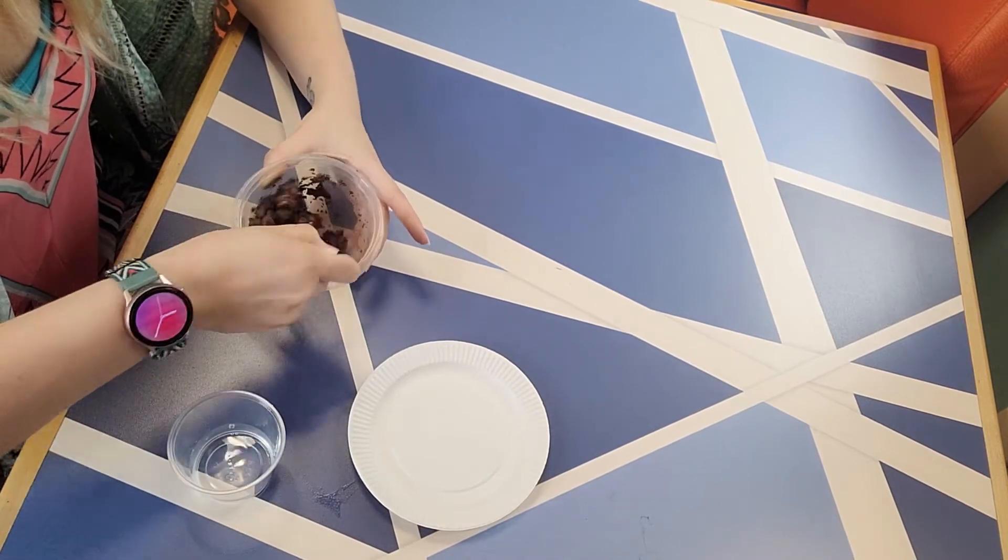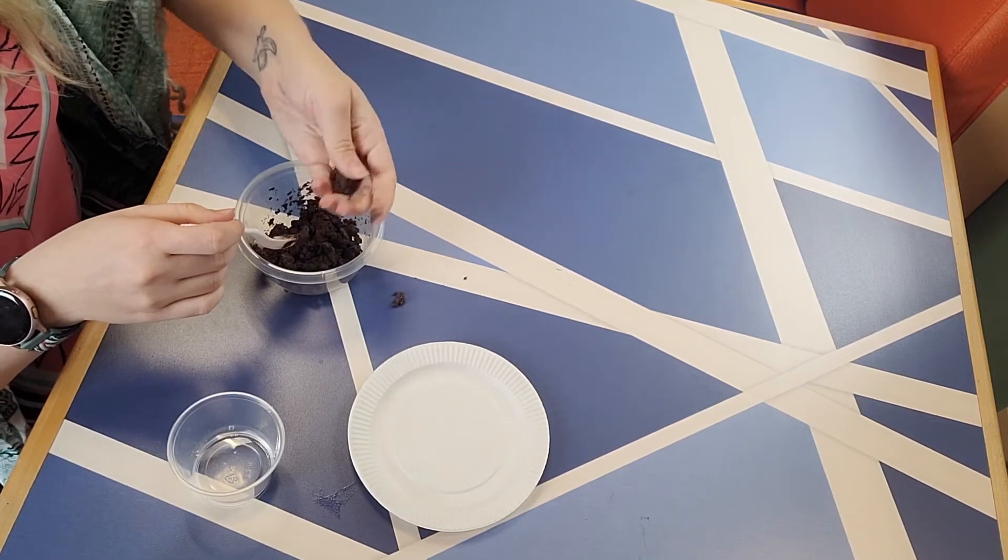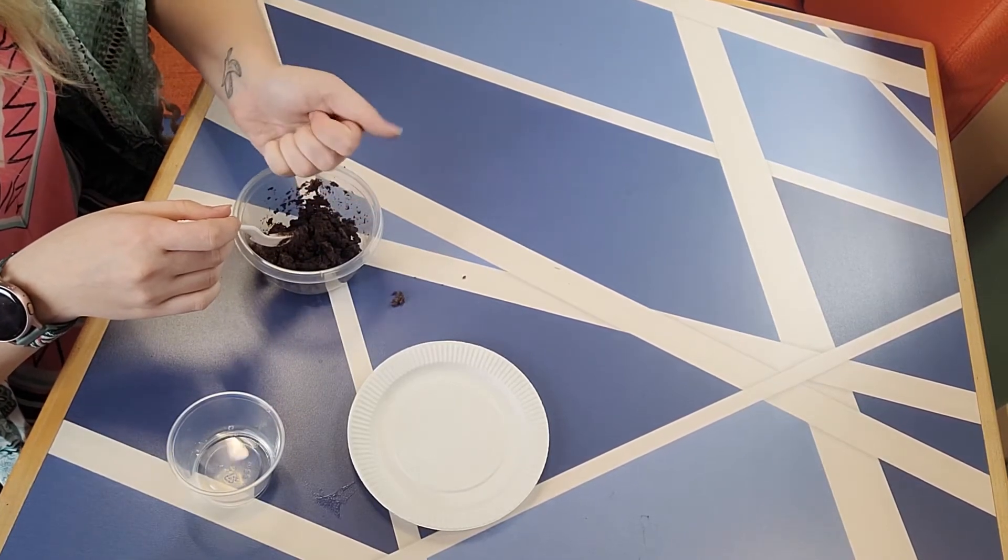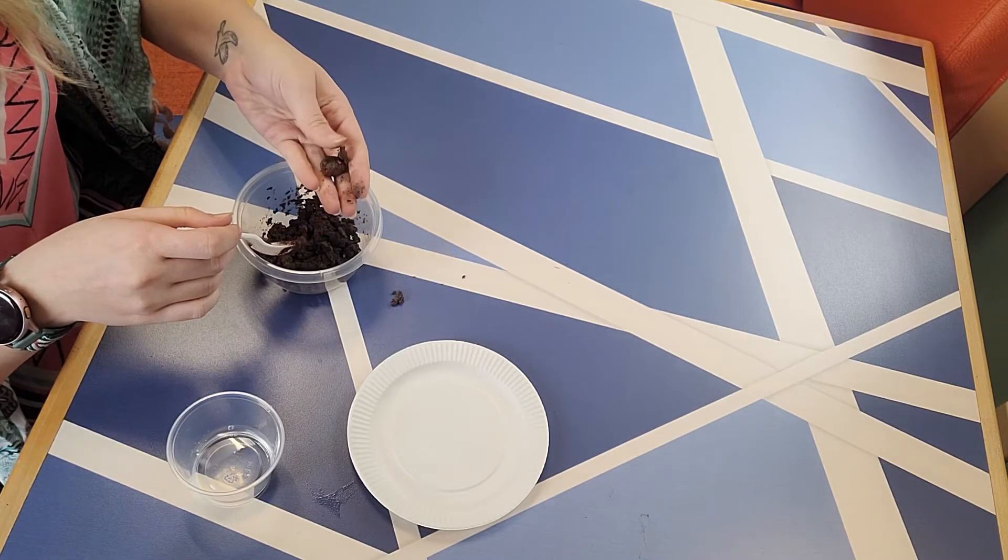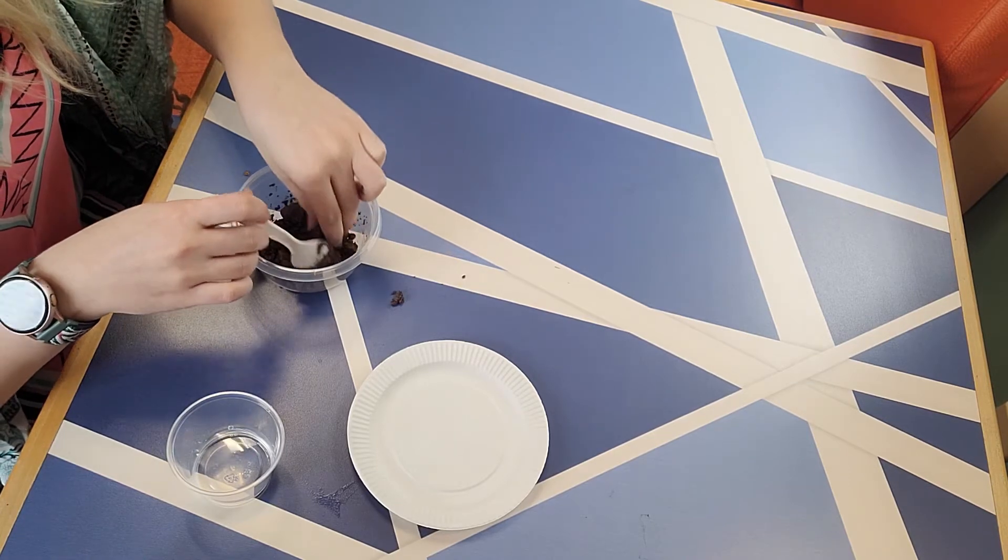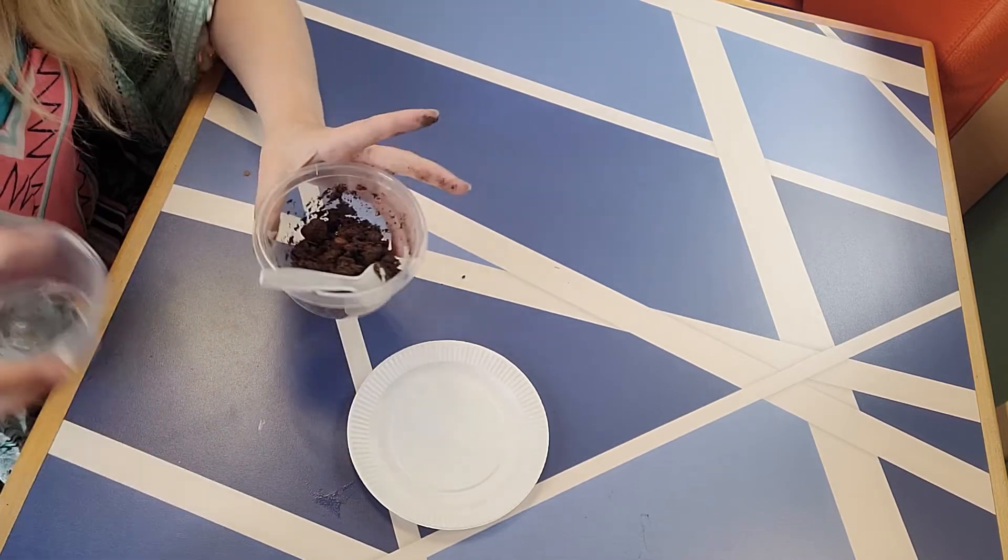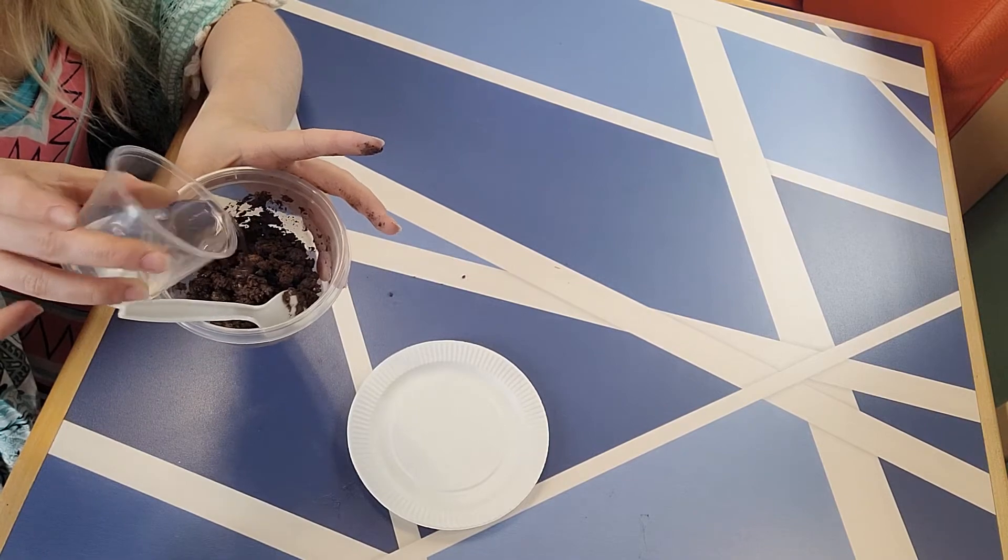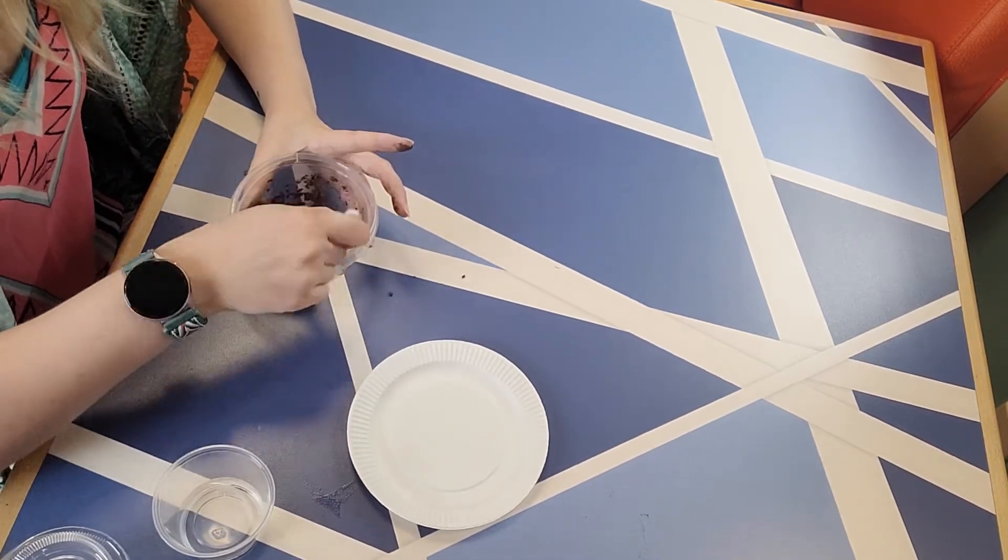So definitely add this gradually and just kind of play around with it and don't be afraid to touch it because it's going to be easiest to tell if it's formable if you try to form it. Okay. So it's basically there, but I want to add a tiny, tiny bit more water. Not very much though. I'm literally just going to add like that much.